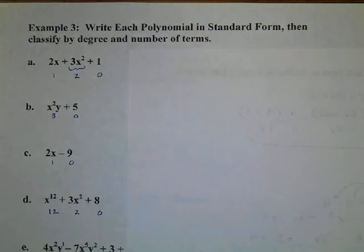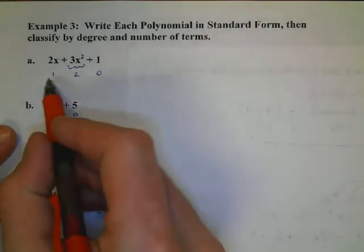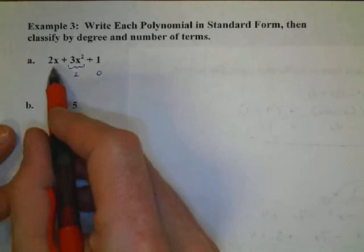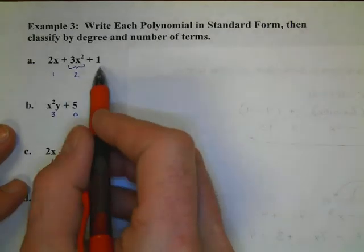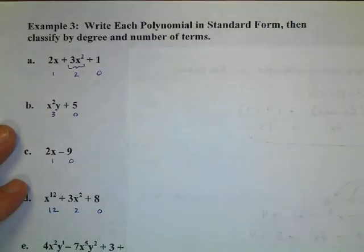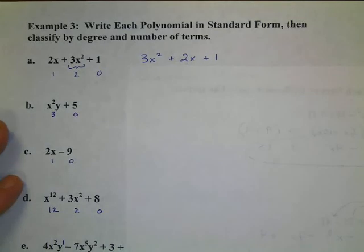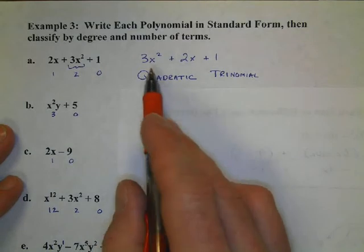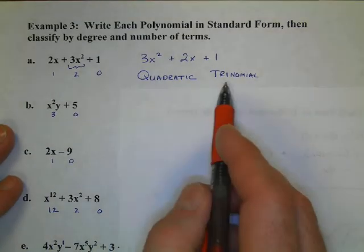The highest degree first and the lowest degree down to zero second. Now, in this first problem, I've identified the degree of the first one. x is 1, x squared is 2, and 1 is 0. So, we write it in the correct order. 3x squared plus 2x plus 1, decreasing degree. Then we're going to classify that. This is a new term we're going to introduce here. This is called a quadratic trinomial. Quadratic because the degree is 2. Trinomial because there's 3 terms.